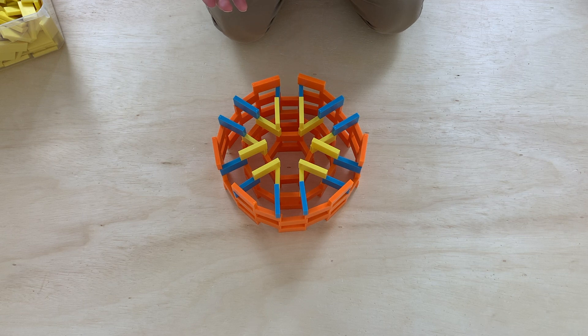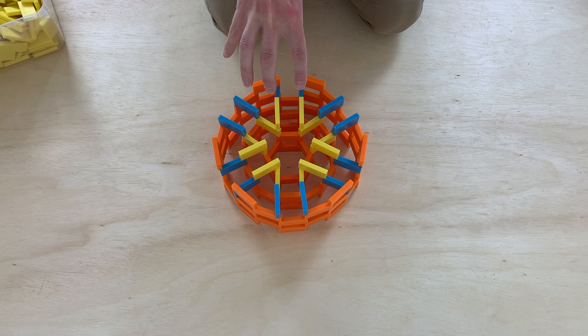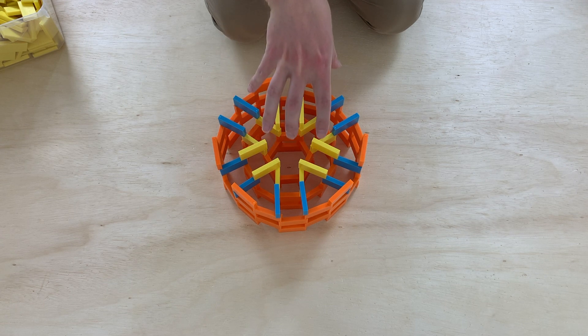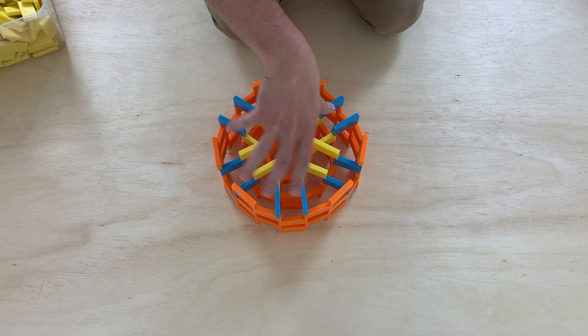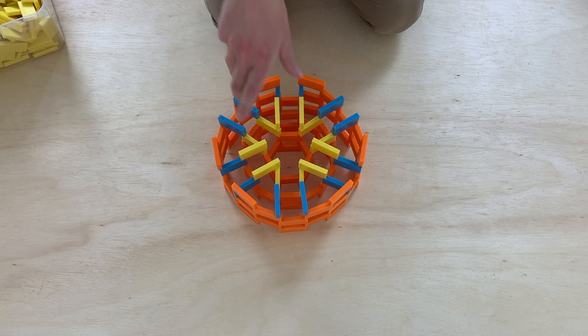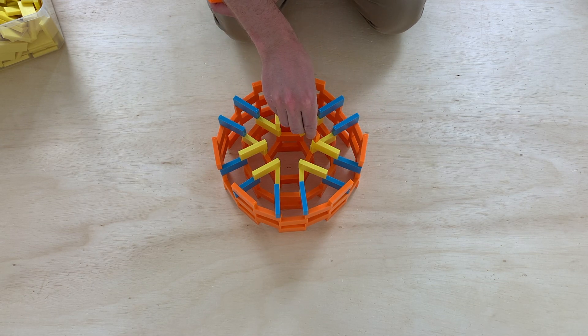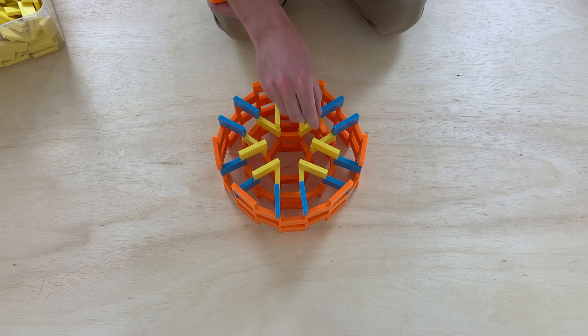Now what I like to do though is I don't like to build an exact copy of this module right on top of itself. What I like to do is to build this whole thing on top of itself except I'm going to rotate it over by one. So we'll go ahead and put three levels of orange circles like we did before.